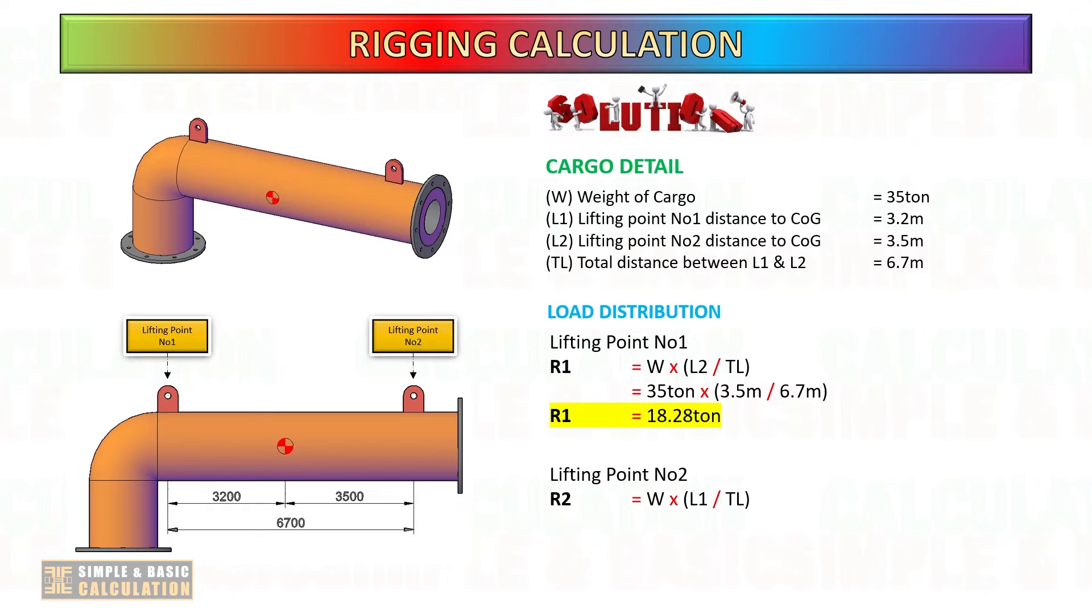To get the forces or load in each lifting point, multiply the weight of the cargo by the lifting point distance to the center of gravity over the total distance of two lifting points.